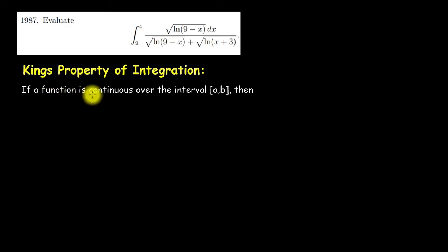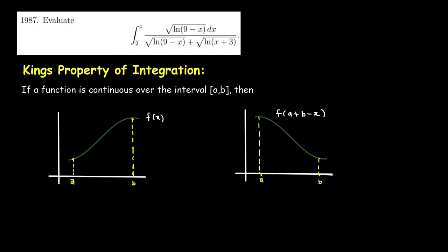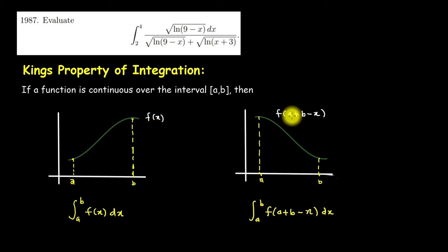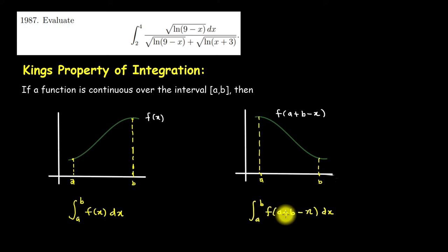If we have a continuous function over the closed interval [a, b], then the area under the graph of f of x is the same thing as the area under the graph of f of a plus b minus x.